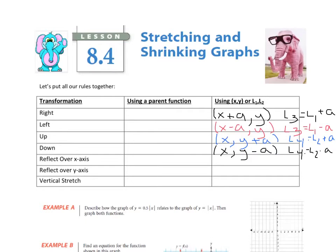So I'm subtracting from the actual value of x, or the y on those. If I'm looking at reflected over the x-axis, that means that my y values are going to change to negative values. So that would change my y to a negative y, changing those actual y values. And if I'm looking at L4, it's going to be equal to a negative L2.